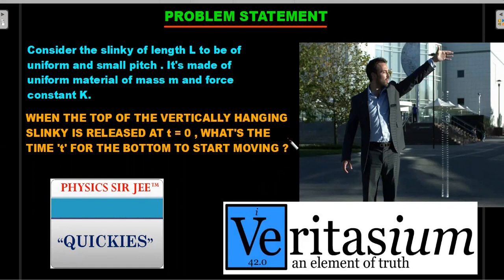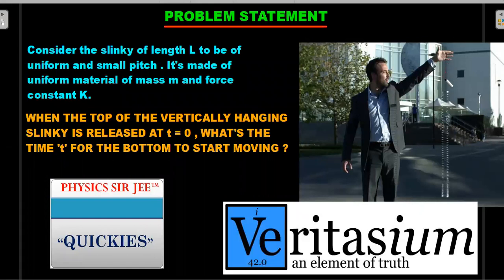Consider a slinky of length L, uniform small pitch, made of material with uniform mass M and force constant K. When the top of the vertically hanging slinky is released at t = 0, the bottom doesn't go down immediately — it takes some time for the bottom to move. What is that time from the start for the bottom to begin moving?